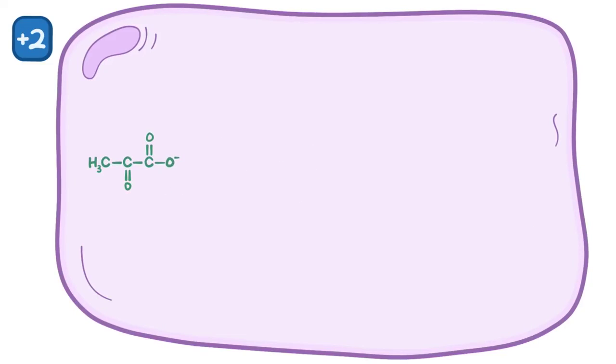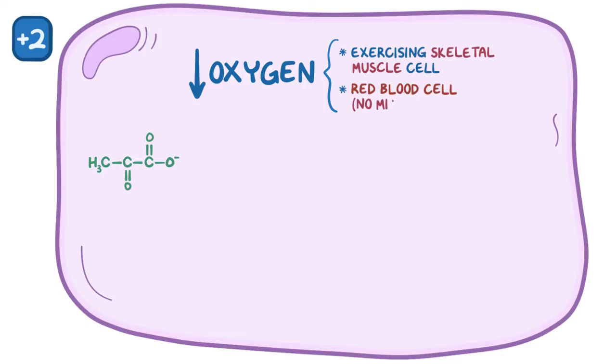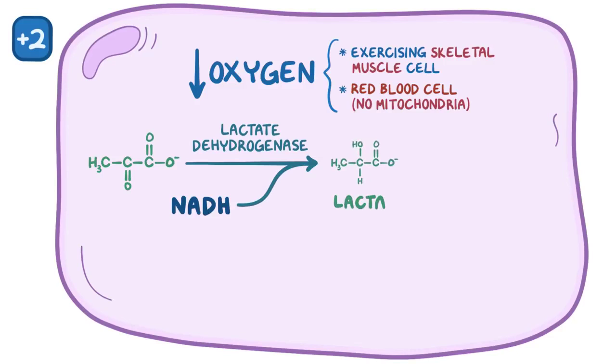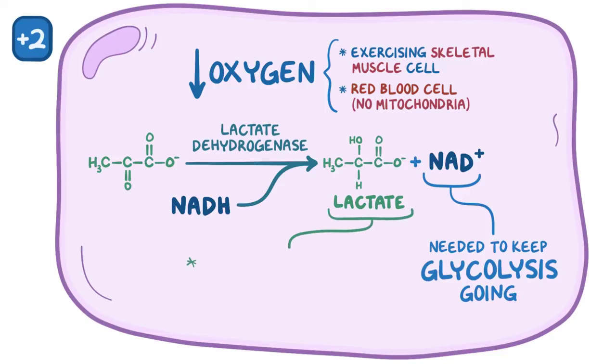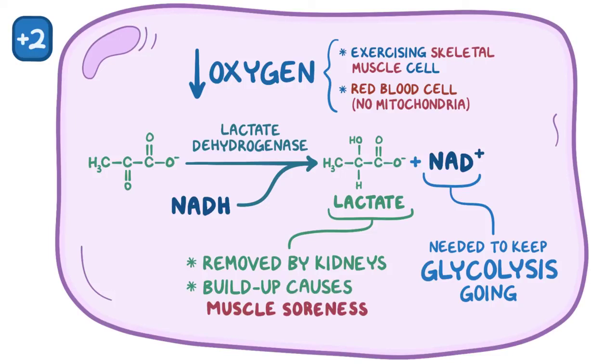Now some cells don't have access to sufficient oxygen, like an exercising skeletal muscle cell or a red blood cell that lacks mitochondria. In those situations, the cell can use the enzyme lactate dehydrogenase to remove hydrogen from an NADH molecule and give it to pyruvate, making lactate and NAD+ as a byproduct. NAD+ is crucial because it's needed to work with G3P dehydrogenase and keep glycolysis going. Now, normally lactate is removed from our blood by the kidneys, but if local lactate levels rise too quickly, it can sometimes build up, and this is what's responsible for some of the muscle soreness you develop when you exercise.